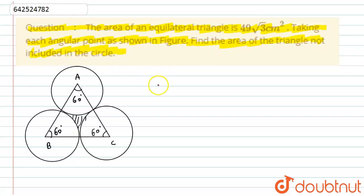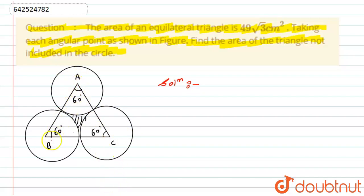Let's start with the solution. Looking at the figure, there are three circles with centers A, B, and C. The sides meeting at these centers — AB, AC, and BC — form a triangle, and it is given that this triangle is equilateral.